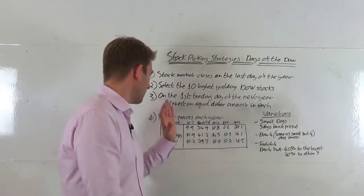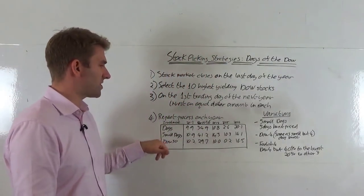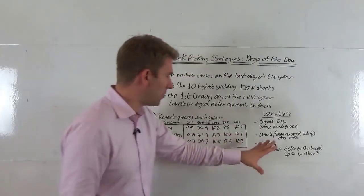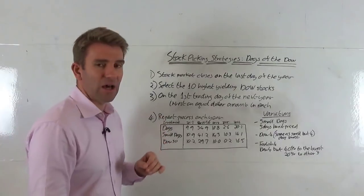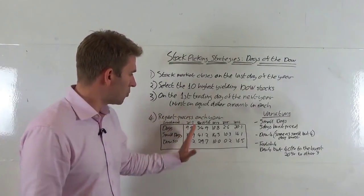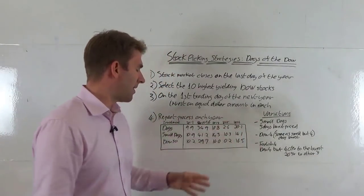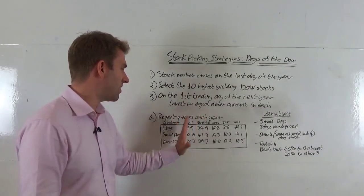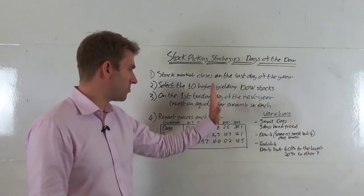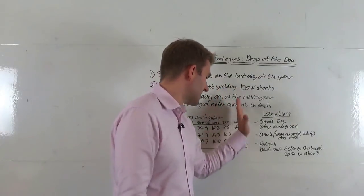So what I've got for you is a table here of the dogs, the small dogs, and the Dow 30. I haven't got the foolish four data, but this is a good idea of the sort of things you've got. So this is all percentages here, and I'll read them out because I know my handwriting isn't the best guys. Percentages 2012, 2013, 2014, 2015, and 2016.